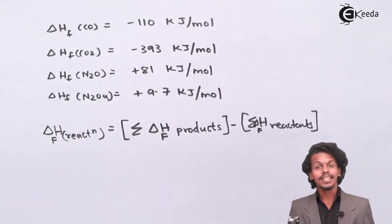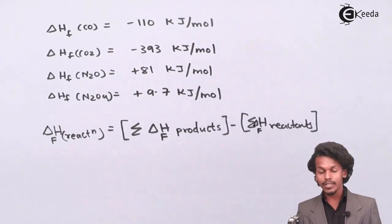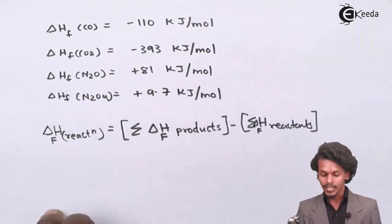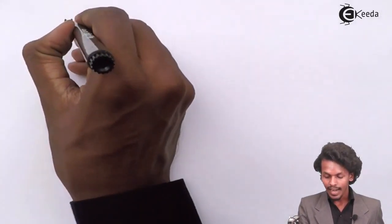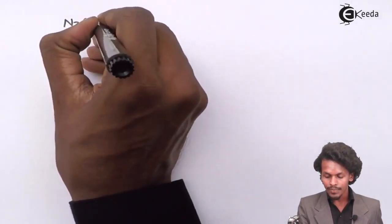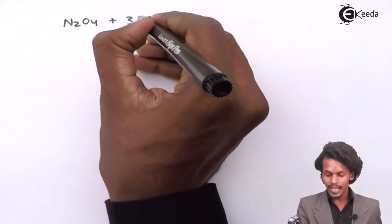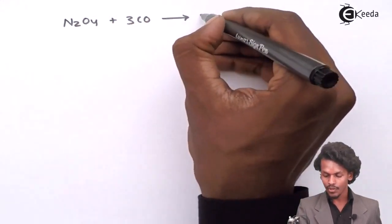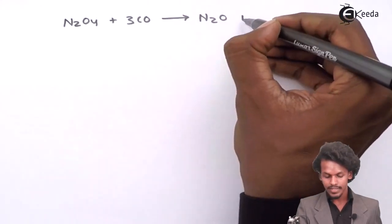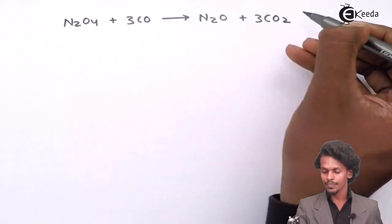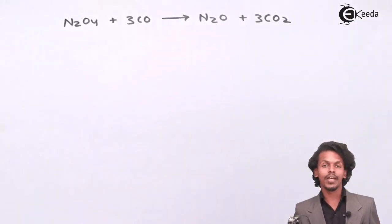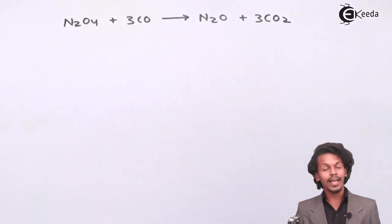We should know the reaction first, and then we can apply the formula. The reaction provided to us is: N2O4 plus 3 times CO gives N2O plus 3 times CO2. In this case, N2O and 3 times CO2 are both the products.